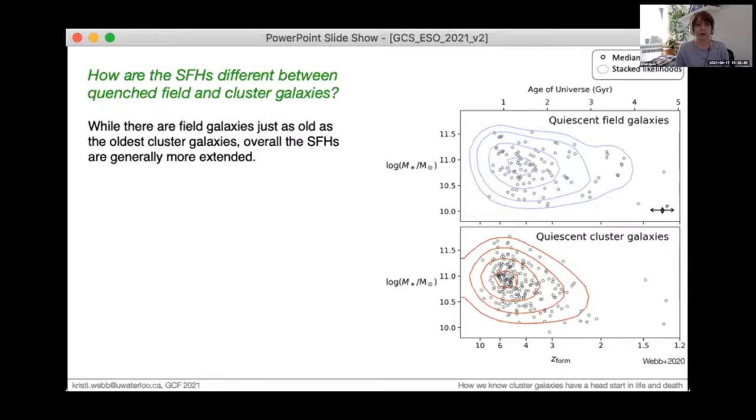At the lower mass end, the star formation histories between the different environments may not in fact be all that dissimilar, but it's definitely true at the larger mass end.